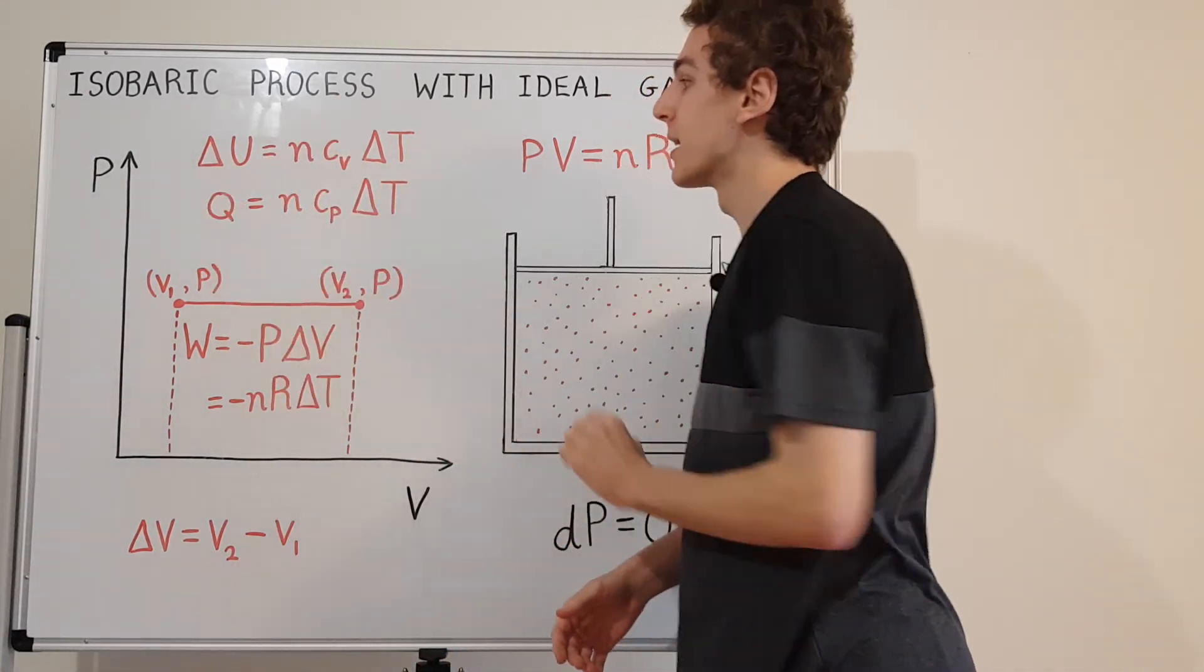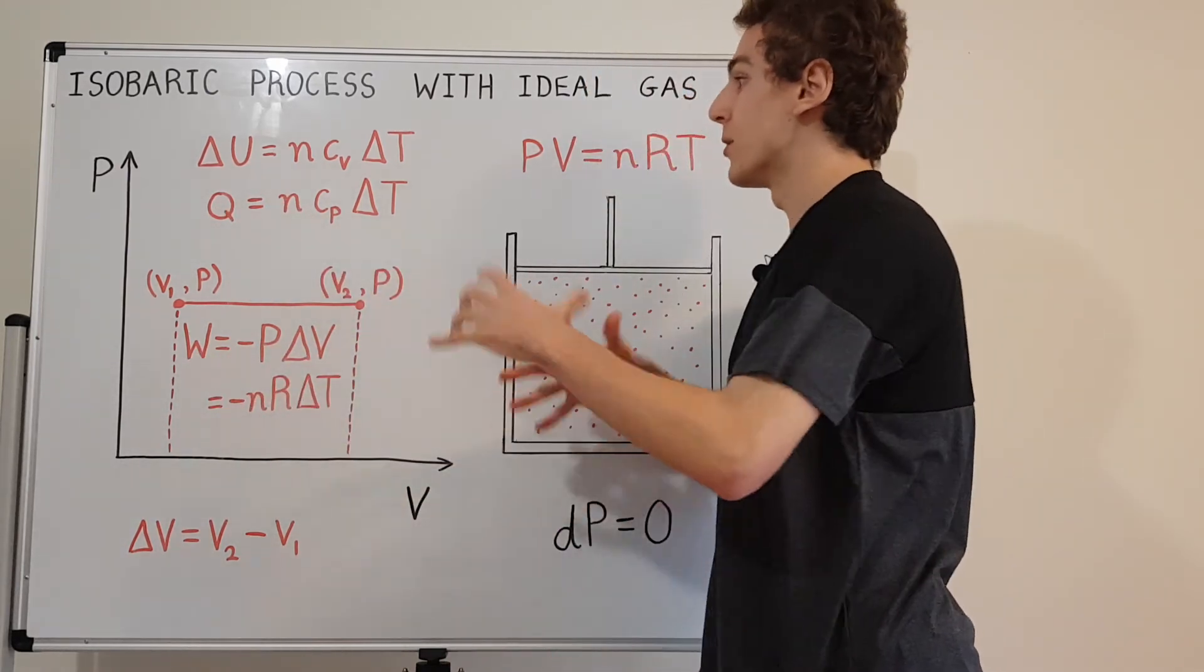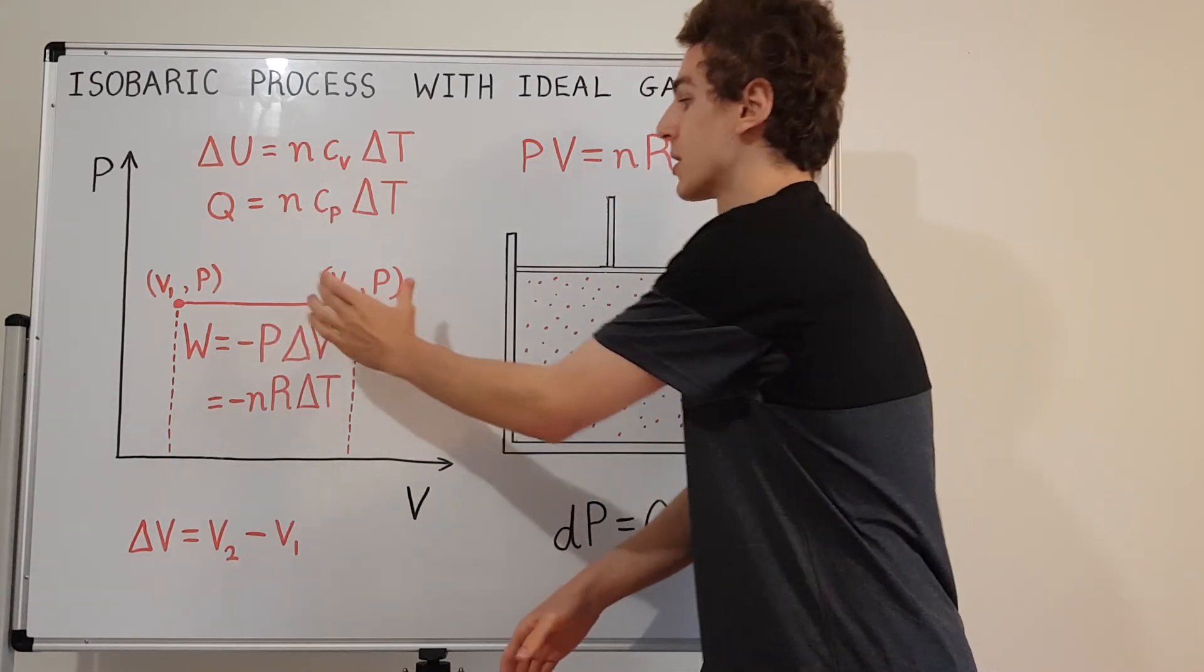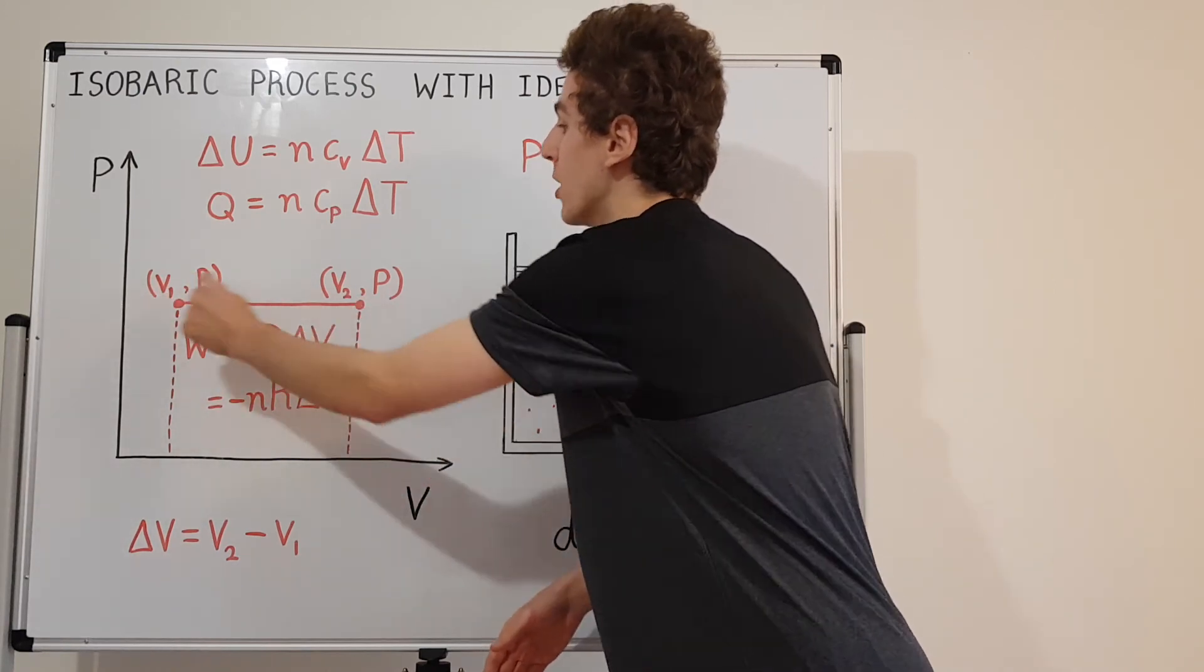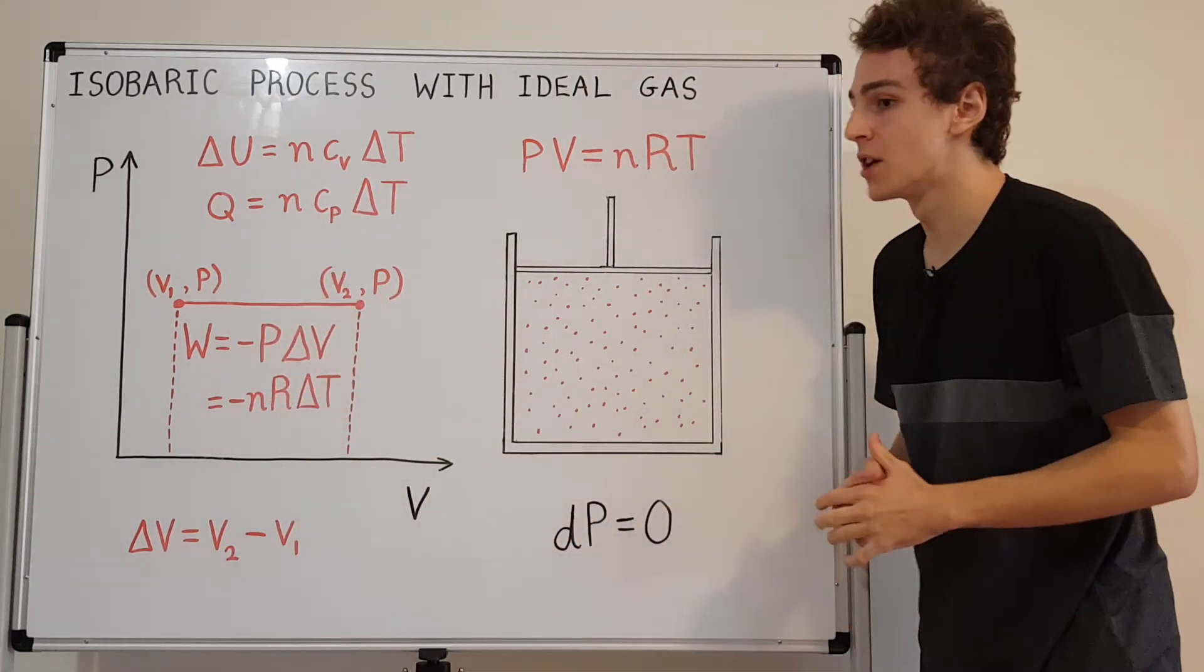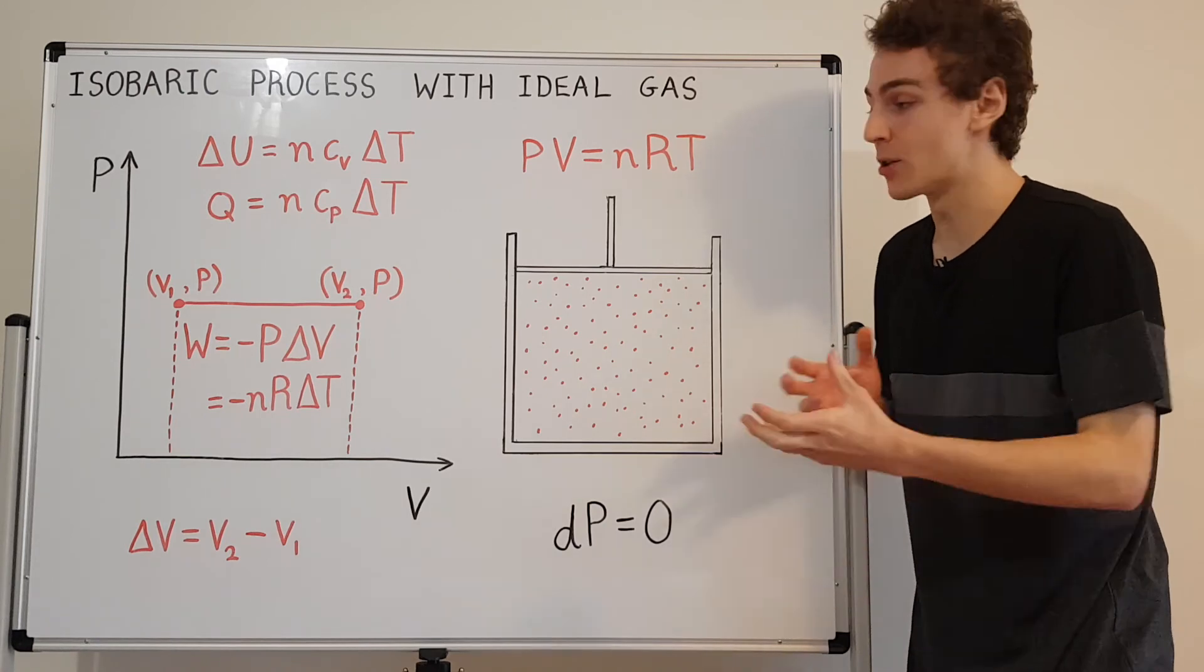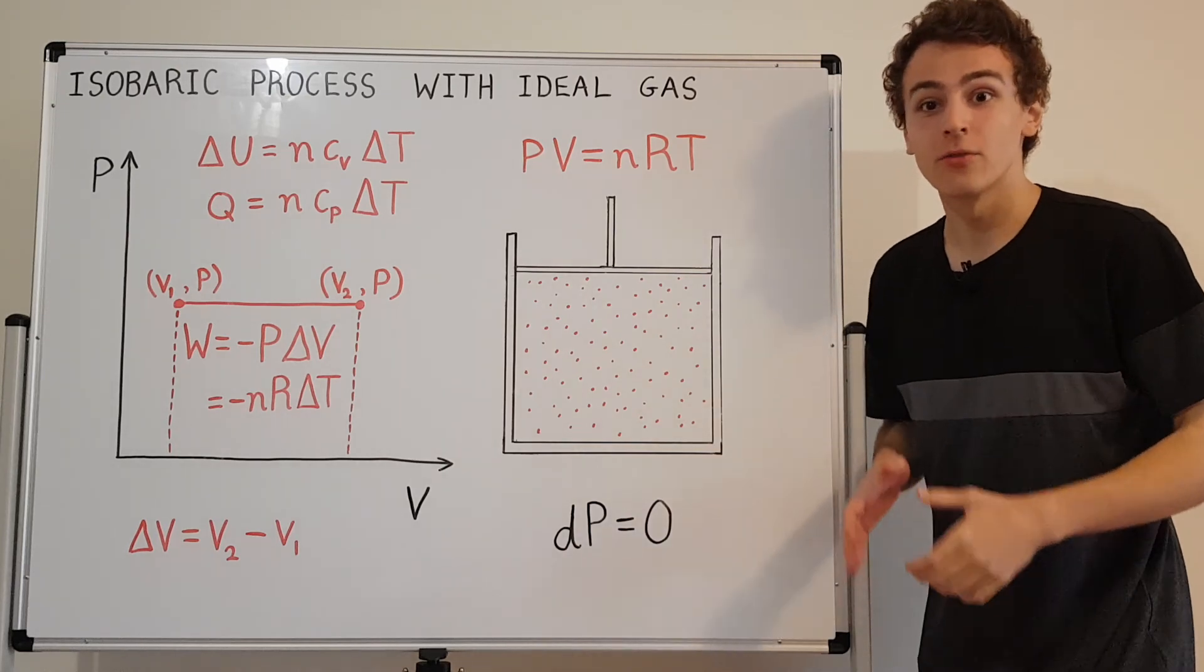So these relationships govern all the important quantities. The internal energy, the heat, and the work. And they're all related to the pressure, the volume, and the temperature. So keep in mind this delta V is just V2 minus V1. I'm showing the coordinates of V2 and V1 over here. So these coordinates correspond to the beginning and endpoint of this isobaric process. So that is an isobaric process with an ideal gas. What we've done here is we've examined some of the expressions that we can use to relate important quantities in thermodynamics and we specifically looked at the situation where the pressure is constant for an ideal gas.